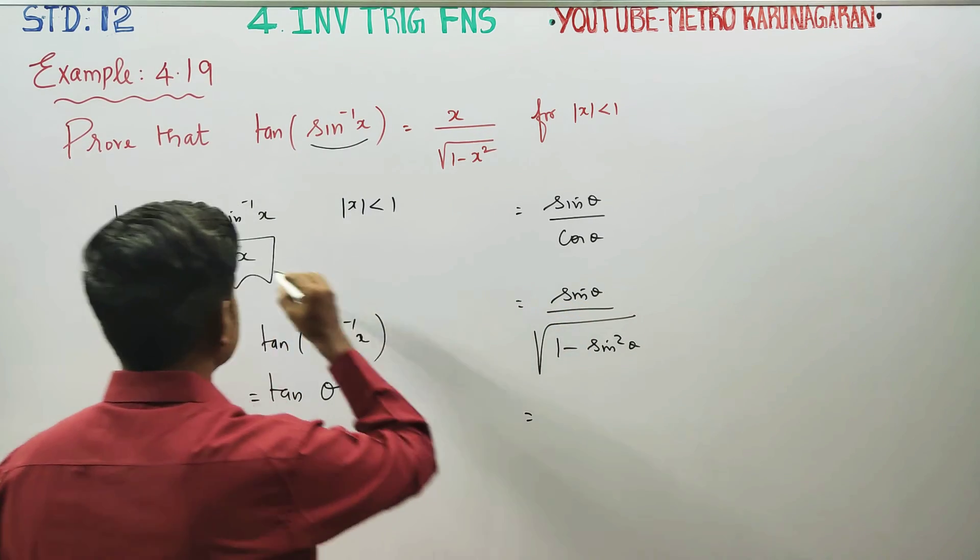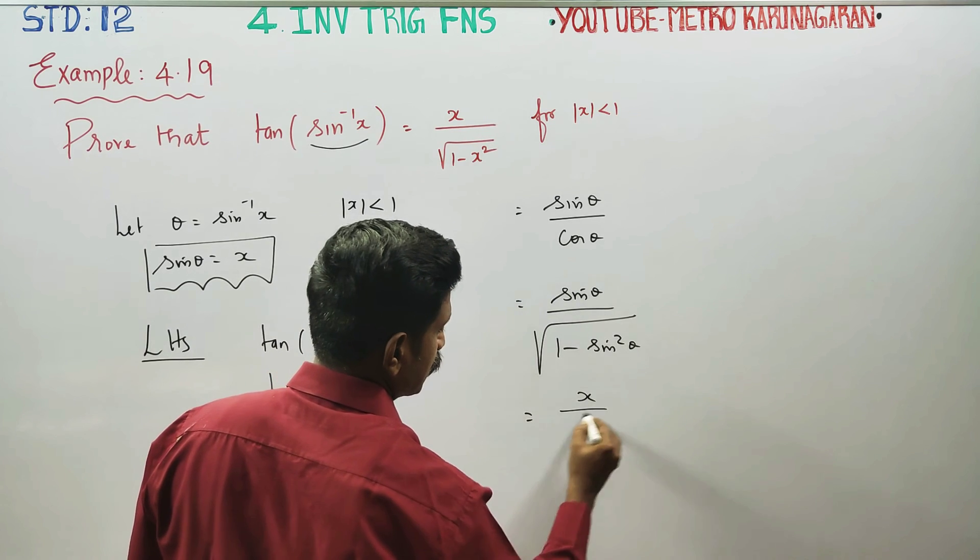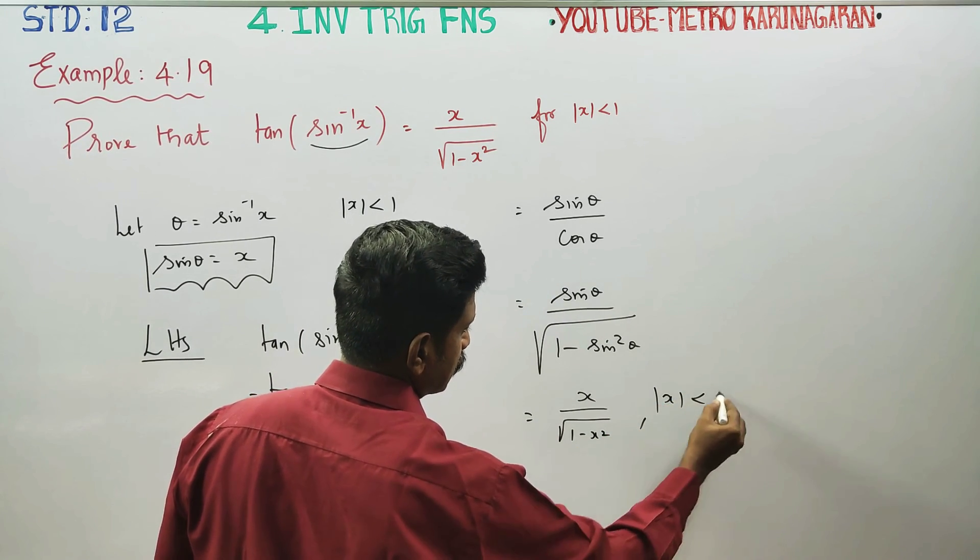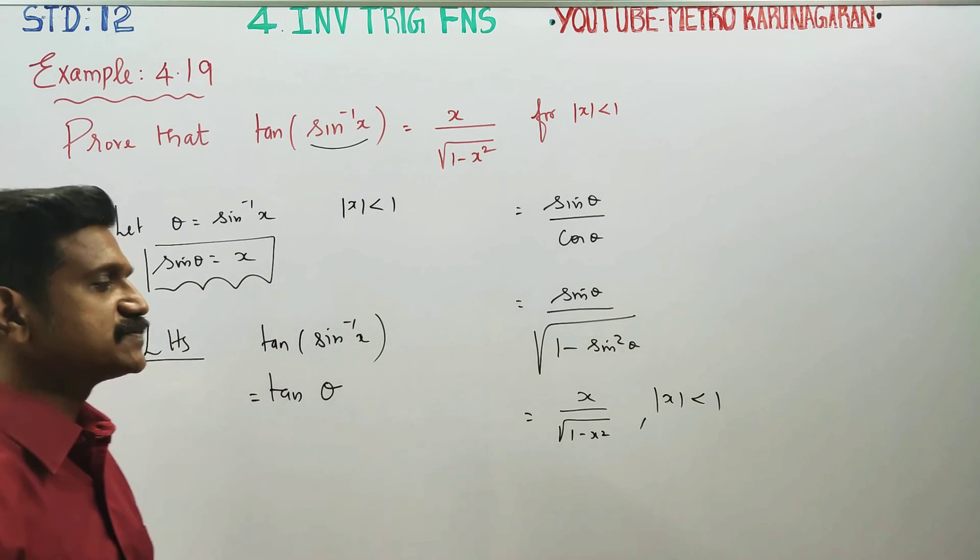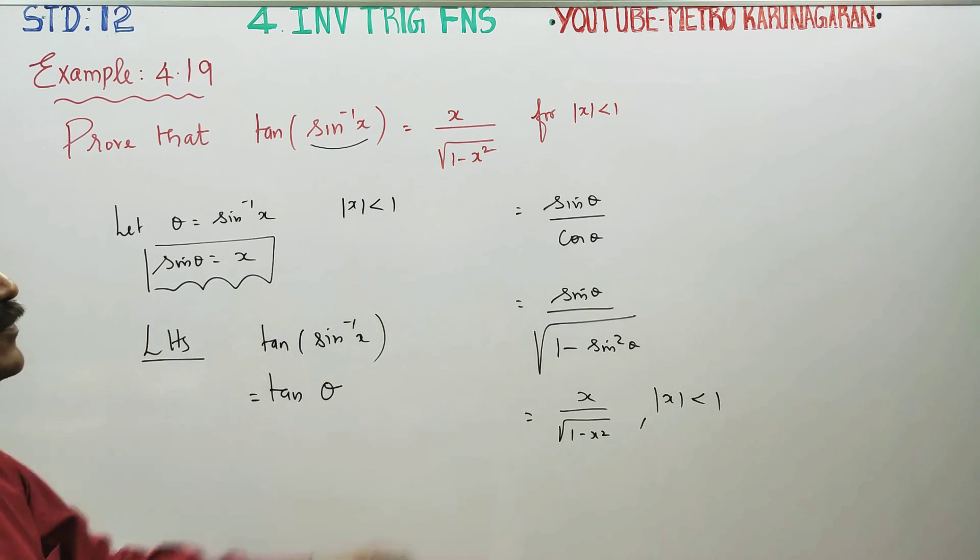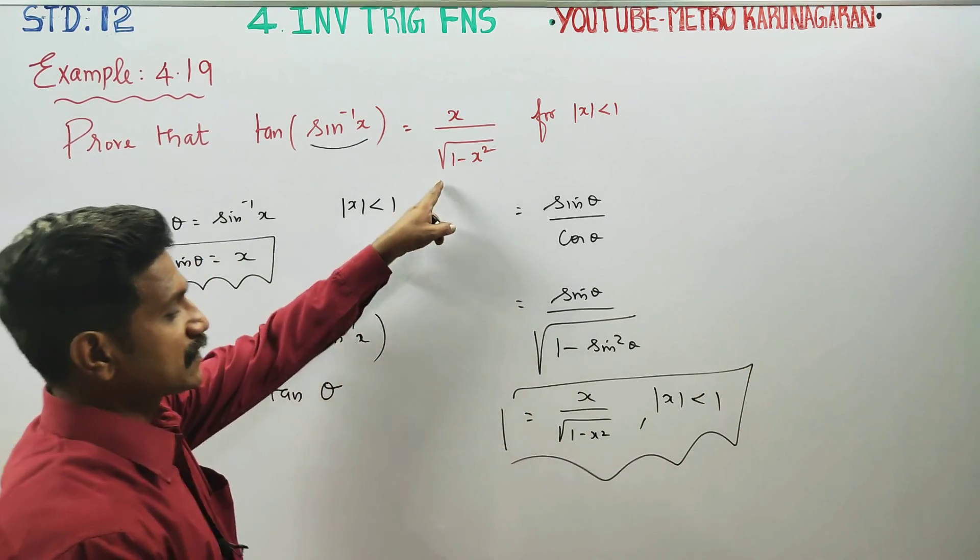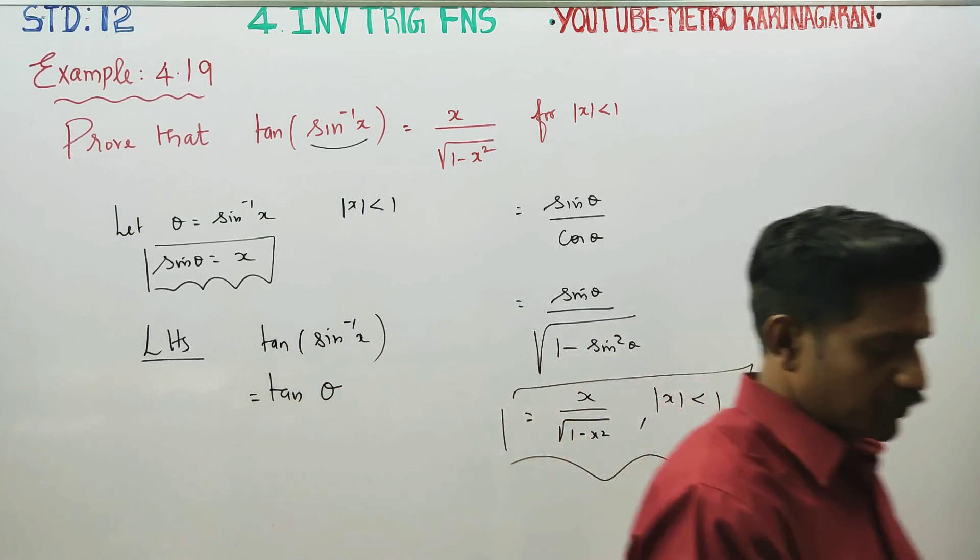So, sin theta would answer x by square root of 1 minus x square and the condition and the principal range is equal to x to the value between minus 1 and plus 1 is equal to RHS. Hence proof.